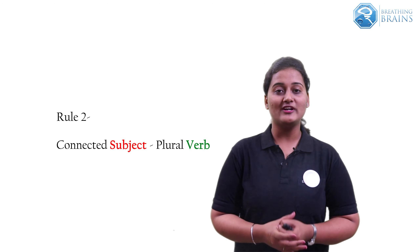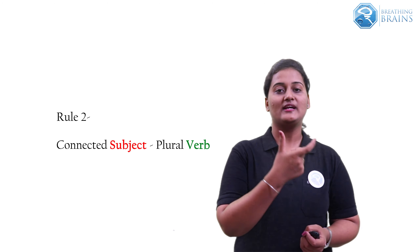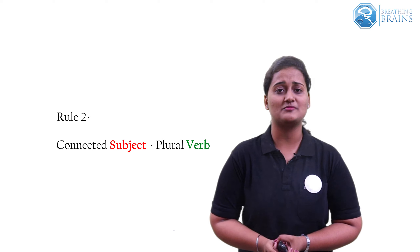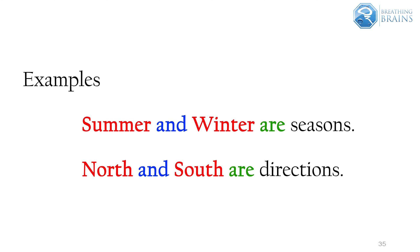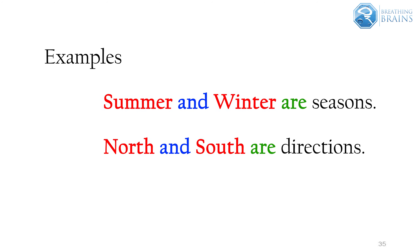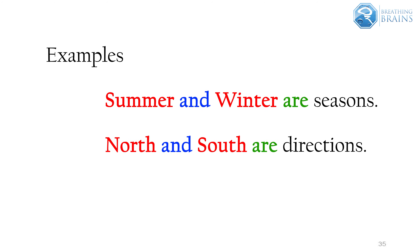Rule number two: when connected subjects are given, we use a plural form of verb. For example, 'Summer and winter are seasons' — we used the connector 'and' to connect two subjects, summer and winter, therefore we use the plural form of verb. Similarly, 'North and south' uses 'and' as a connector, so both subjects use the plural form of verb.